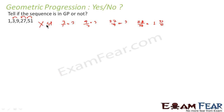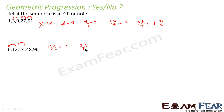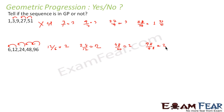Next example: 6, 12, 24, 48, 96. We check: 12 divided by 6 is 2; 24 divided by 12 is 2; 48 divided by 24 is 2; and 96 divided by 48 is also 2. The ratio is constant, so this is a GP.